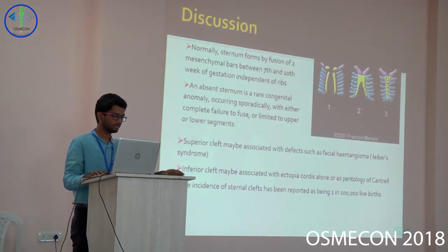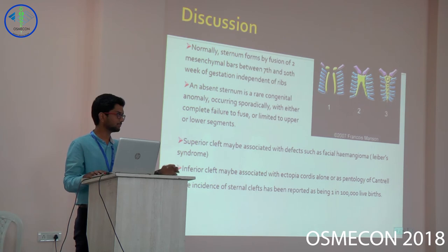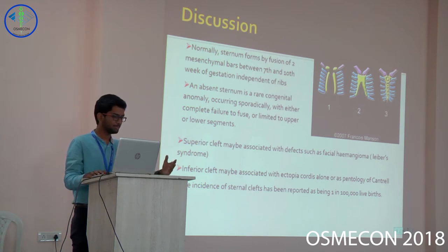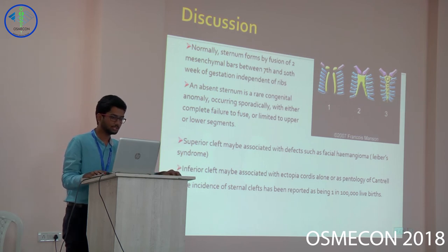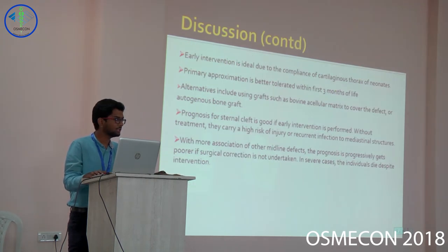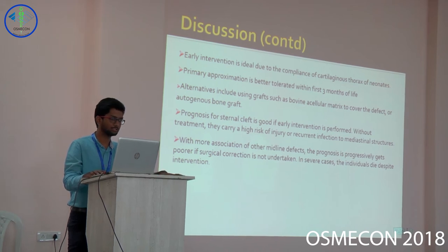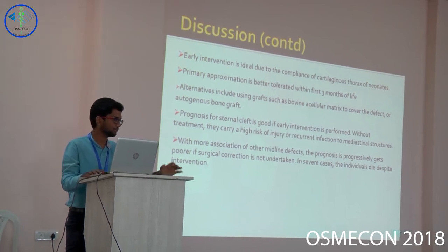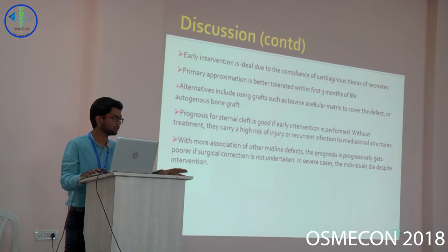The sternum is normally formed by fusion of the bilateral sternal bars by approximately 9 weeks gestation. The cleft can be complete, inferior, or superior in type and may be associated with other features. The incidence is reported as one in 100,000 live births by some authors. Early surgical intervention is ideal as chest wall compliance is better at a younger age. Alternatives include the use of acellular matrix and autologous bone grafts.